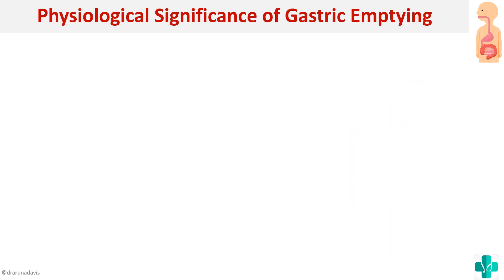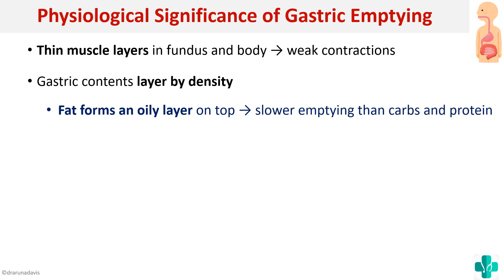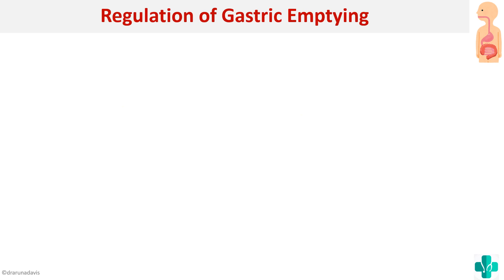Regarding the importance of gastric emptying: the thin muscle layers in the fundus and body produce weak contractions, which prevent reflux and allow the stomach to act as a reservoir. Gastric contents also layer by density — fat forms an oily layer on top, so fat has slower emptying than carbohydrates and proteins. Liquids empty faster because they can flow around the solid mass and enter the antrum more readily than solids.